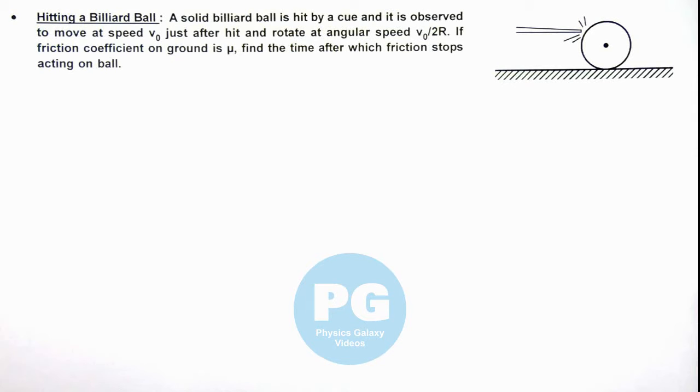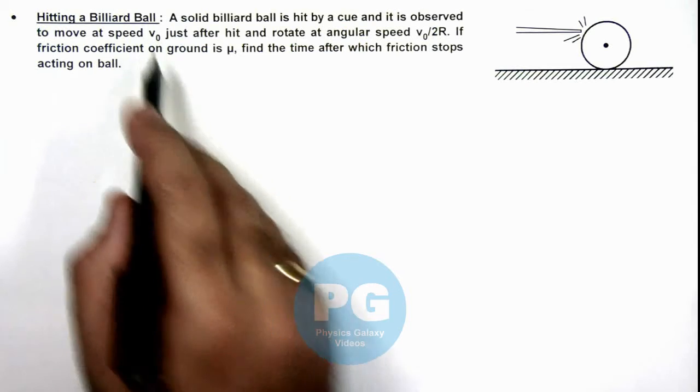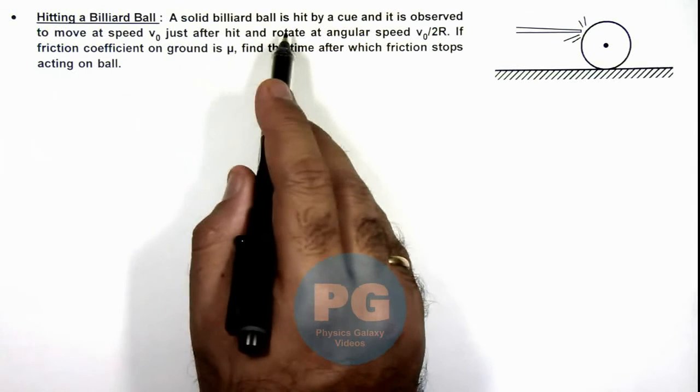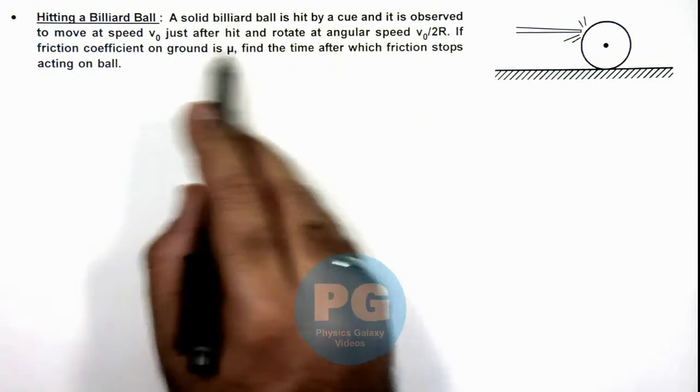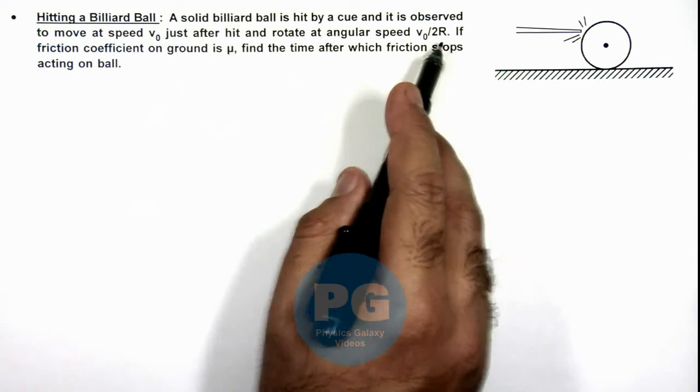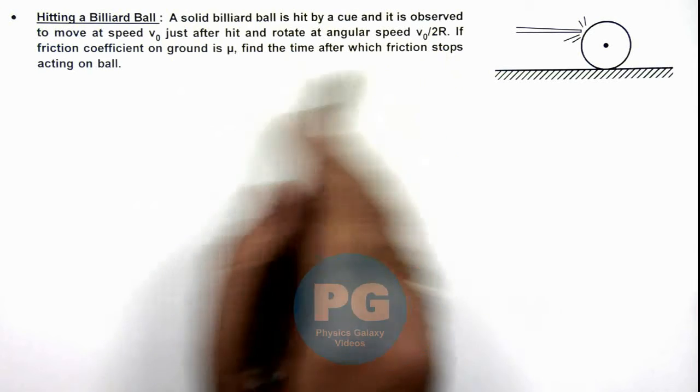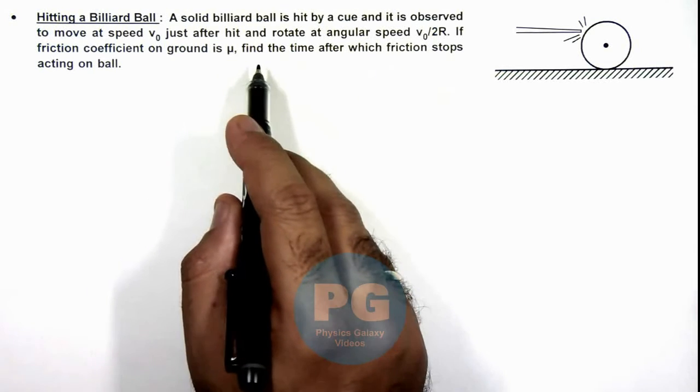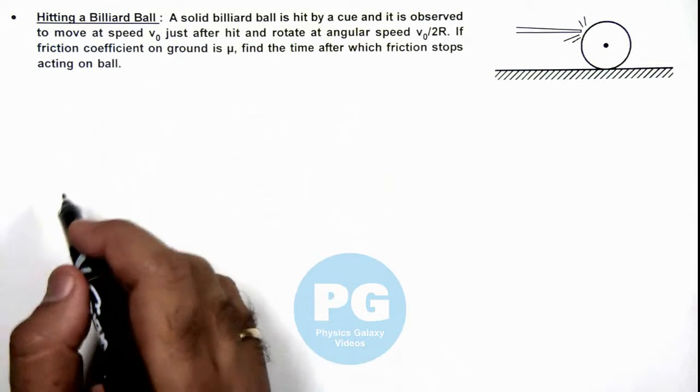In this illustration, we'll analyze the case of hitting a billiard ball. We are given that a solid billiard ball is hit by a cue and observed to move at speed v₀ just after hit and rotate at angular speed v₀/2r. That means it is not in pure rolling. If friction coefficient on ground is μ, we are required to find the time after which friction stops acting on ball.